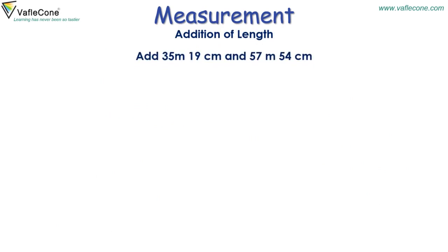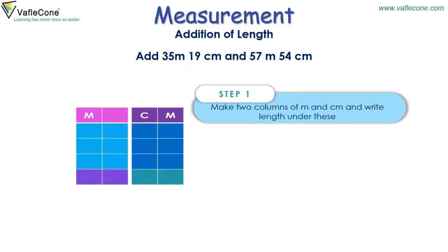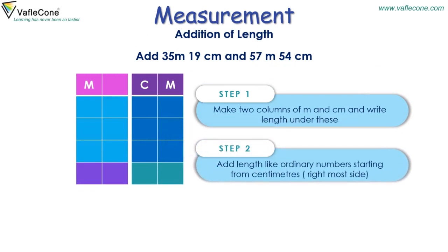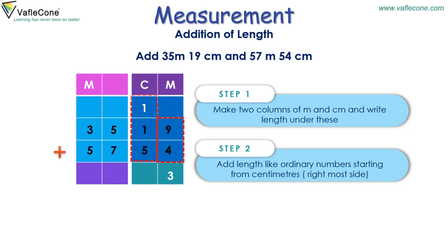Add 35 meters 19 cm and 57 meters 54 cm. Step 1: Make two columns of meter and centimeter and write the lengths under these. Step 2: Add the lengths like ordinary numbers starting from centimeters. Place 35 and 57 in the meter column and 19 and 54 in the centimeter column. 9 plus 4 is equal to 13, so place 3 and carry 1. Then 1 plus 1 plus 5 is equal to 7.